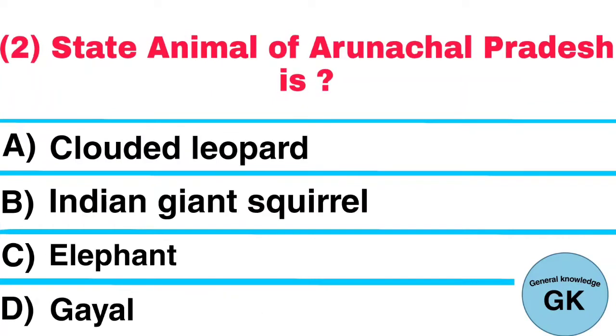Question Number 2. State Animal of Arunachal Pradesh is: A. Clouded Leopard, B. Indian Giant Squirrel, C. Elephant, D. Guile. Answer: Guile.